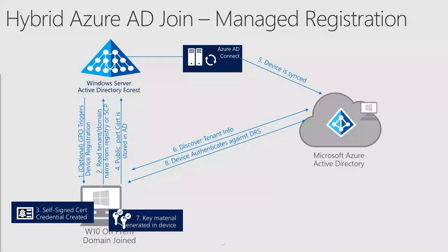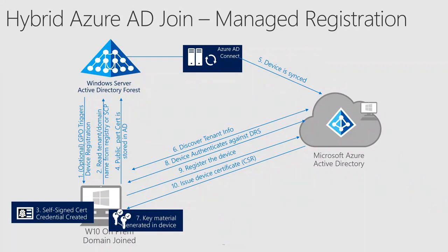Azure DRS validates the token, updates the device object previously created by Azure AD Connect, and creates a device certificate based on the certificate request. In step 10, Azure DRS then responds back to the workstation with the device certificate and the device ID. The device certificate issued by Azure DRS is added to the machine's local store and will be used by the workstation during token requests.